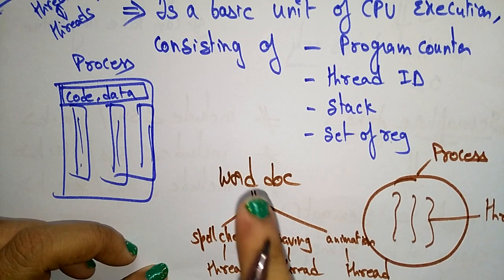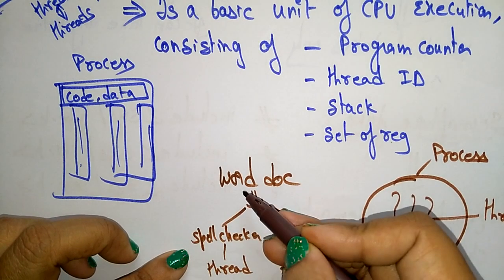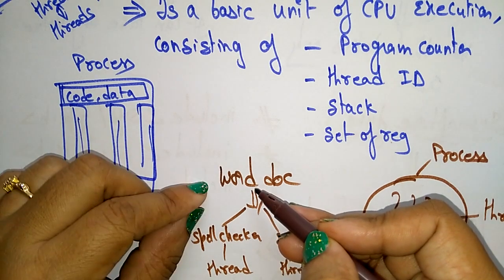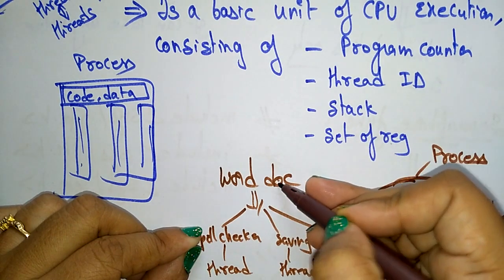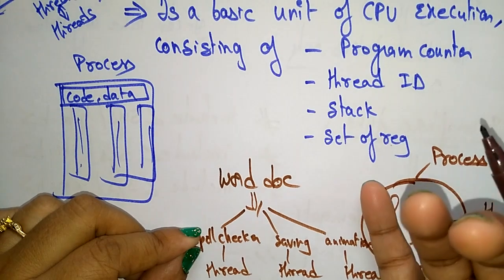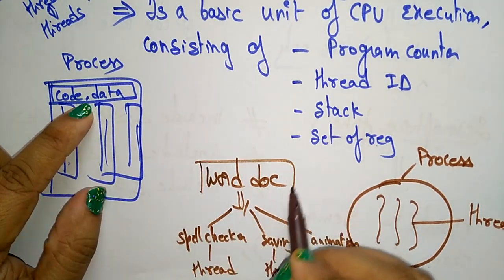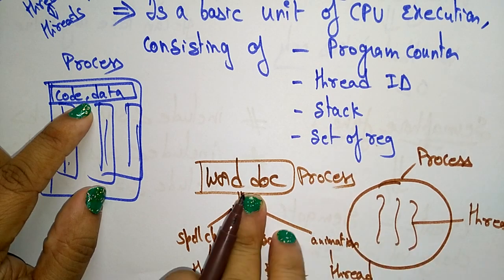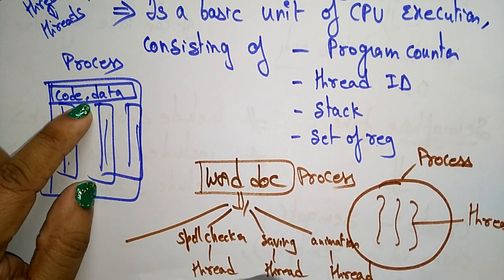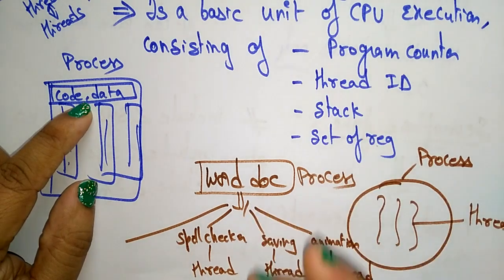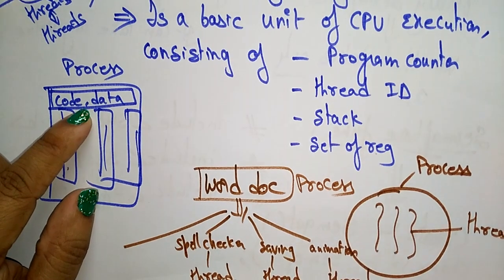The spell checker thread shares the resources of the Word document — it needs the code, data, and library functions present in Word. For saving, it also needs the code and data sections of Word. For creating animations or inserting pictures, you need to share the code and data present in the Word document. So Word is the process, and spell checker, saving, animations, coloring — all these operations are uniquely called threads.